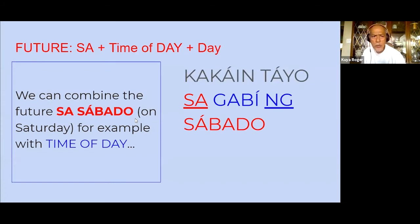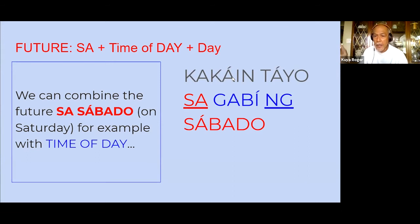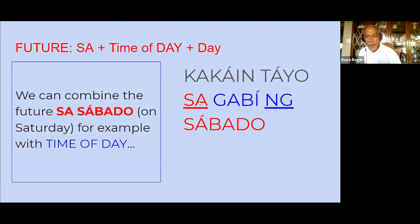Here's something not in your notes: when you say a future expression like sa sabado, you can add the time of day in the middle. Sa gabi ng sabado — Saturday night. You can say sa umaga ng sabado, sa tanghali ng sabado. This is the connective ng: you still have sa sabado, but if you want to specify what time on Saturday, you put the time of day between sa and sabado.